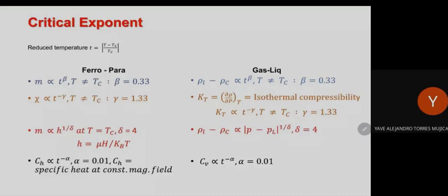For the mathematical formulation, let's call F(X,Y) a generalized homogeneous function. The definition is: if F(lambda^A * X, lambda^B * Y) = lambda * F(X, Y), where A and B are two arbitrary numbers and lambda is an arbitrary parameter, then this function is a generalized homogeneous function. By choosing lambda = X^(-1/A) and substituting into the equation, we get F(X,Y) = X^(1/A) * Φ(Y / X^(B/A)), where Φ is another scaling function.